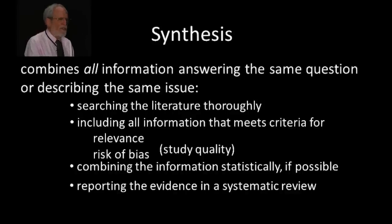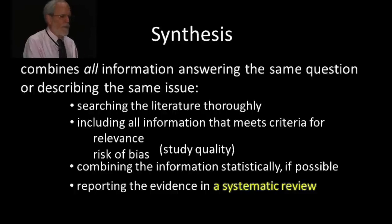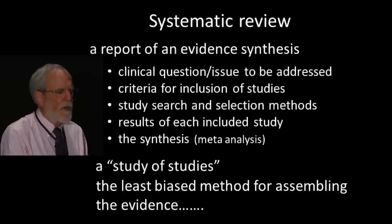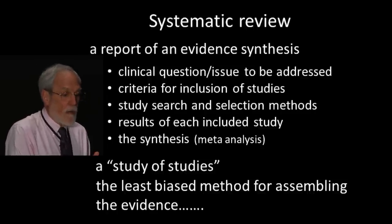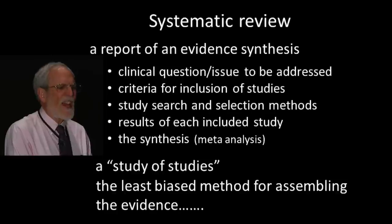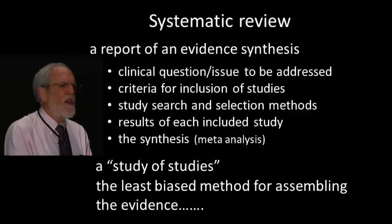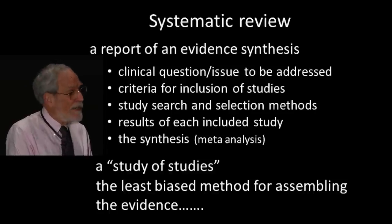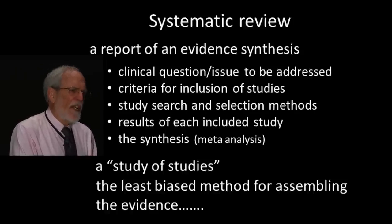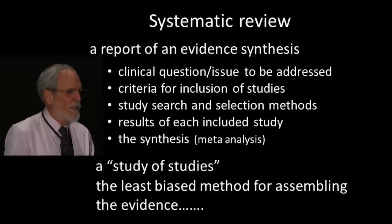You then report this evidence in a systematic review, which is now the preferred vehicle for getting evidence to the practicing profession. A systematic review is simply a report of an evidence synthesis. It describes the clinical question, the inclusion criteria, how the search was done, the results of each included study with its risk-of-bias level, and how the synthesis was done and what its results were. It's really just a study of studies — and the least biased method science has so far for assembling evidence to answer any clinical question.